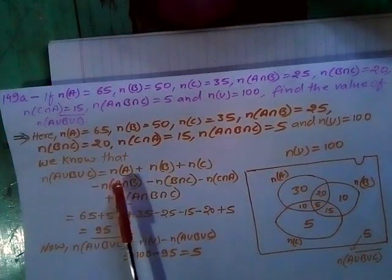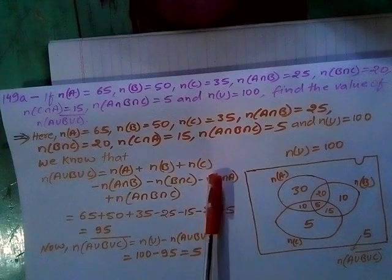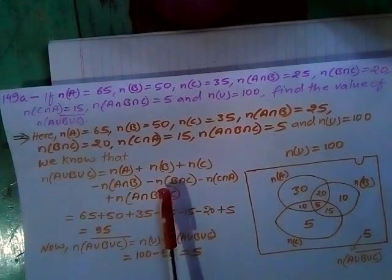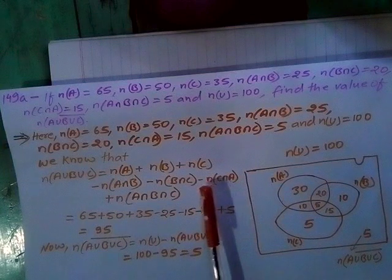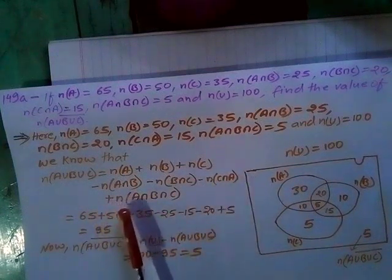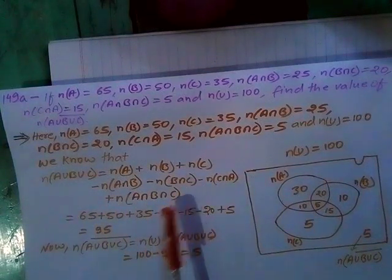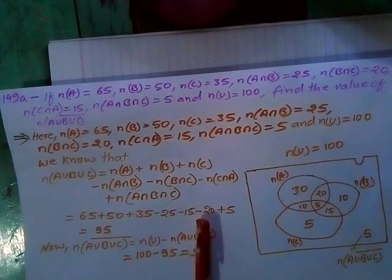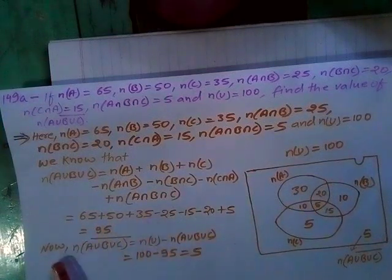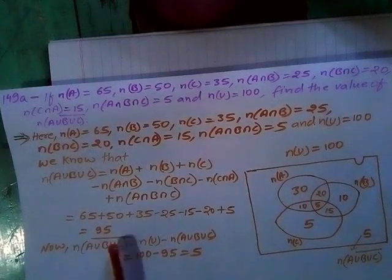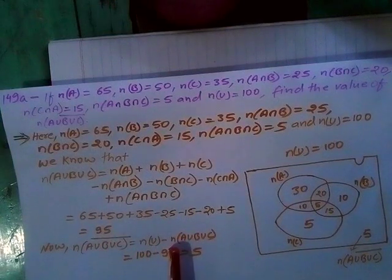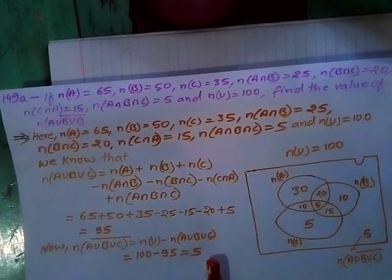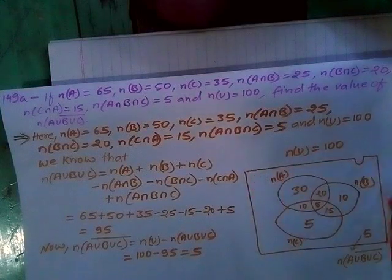Using the formula: N A union B union C equals N A plus N B plus N C minus N A intersection B minus N B intersection C minus N C intersection A plus N A intersection B intersection C equals 65 plus 50 plus 35 minus 25 minus 20 minus 15 plus 5 equals 95. Then N A union B union C complement equals N U minus N A union B union C equals 100 minus 95 equals 5.